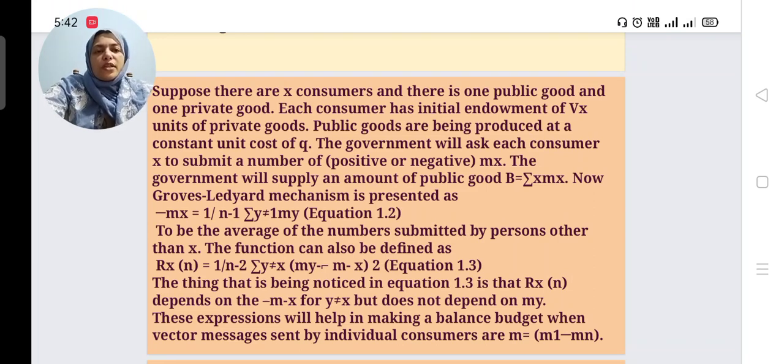The government will supply the amount of public goods b that is equal to summation of n mx. Now Groves-Ledyard mechanism is presented as another equation: -mx = 1/(n-1) × summation (y≠x) my. Let us consider this equation as 1.2 to be the average of the numbers submitted by persons other than x.